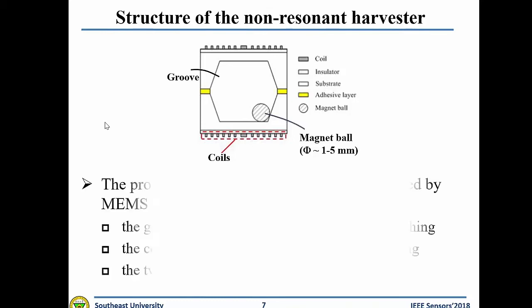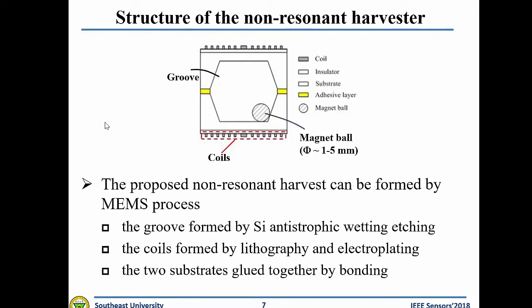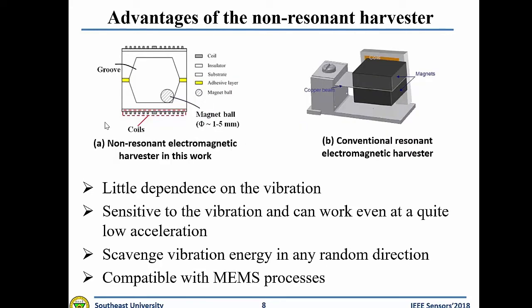It is noted that the proposed harvester can be fully fabricated by MEMS technology. The groove can be fabricated by silicon anisotropic etching, the coils can be formed by electroplating, and the two substrates can be bonded together using bonding technology. The main advantages of this harvester include little dependence on vibration frequency, high sensitivity to vibration even at very low acceleration, the ability to scavenge vibration energy in any direction, and compatibility with MEMS process for small form factor.